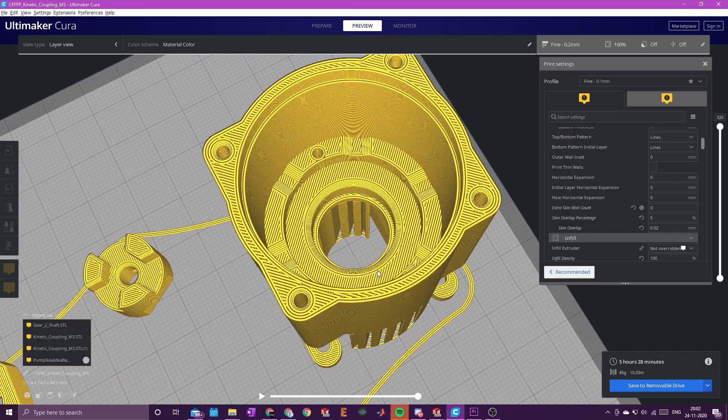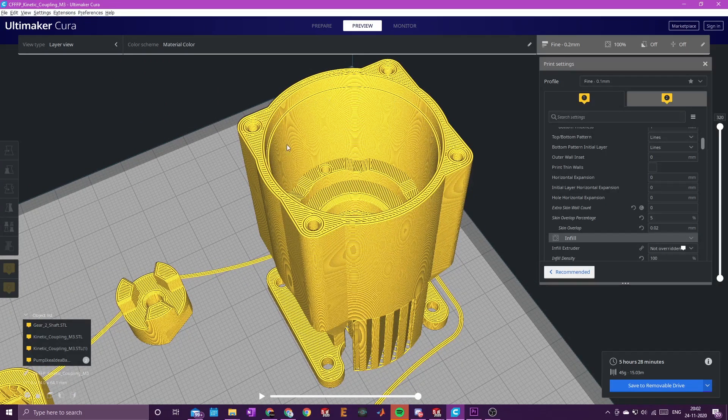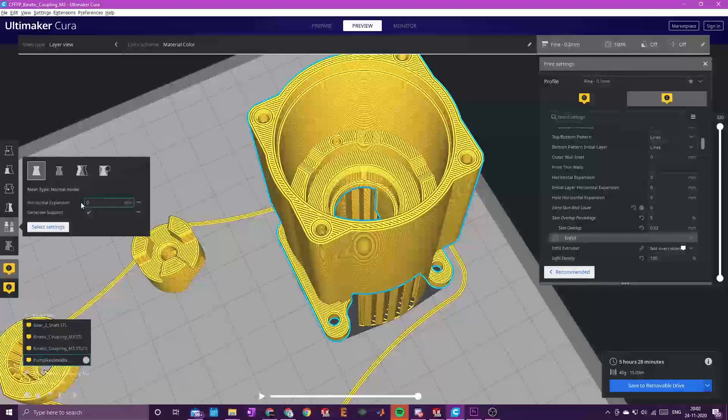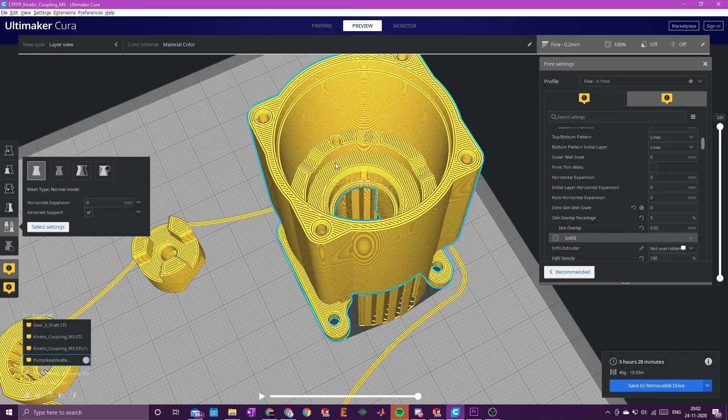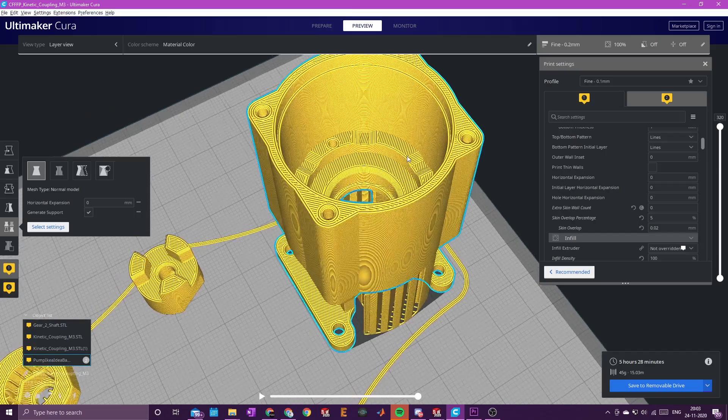This offsets the wall inwards or outwards so you can get the bearing fit correct. There's a bearing that needs to be inserted in this opening, and the planetary gear housing from the drill goes in the larger opening. If the fit isn't correct, apply a negative value for horizontal expansion and the paths will be set inwards, making the opening larger.